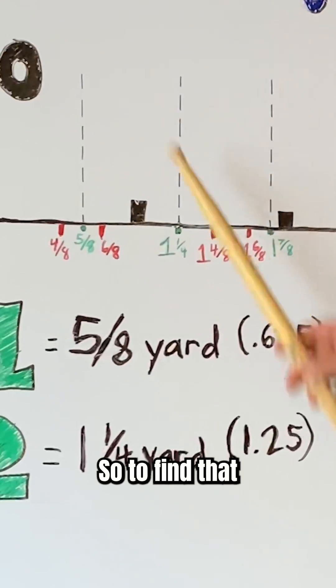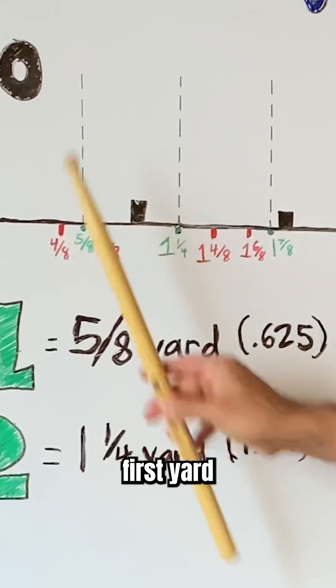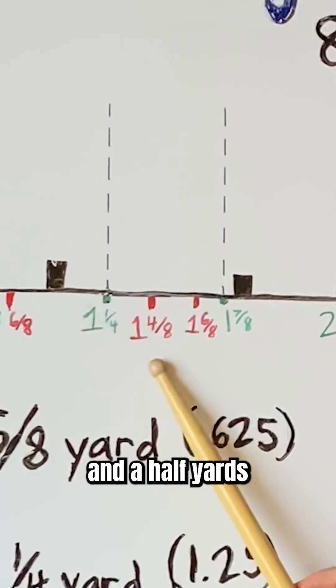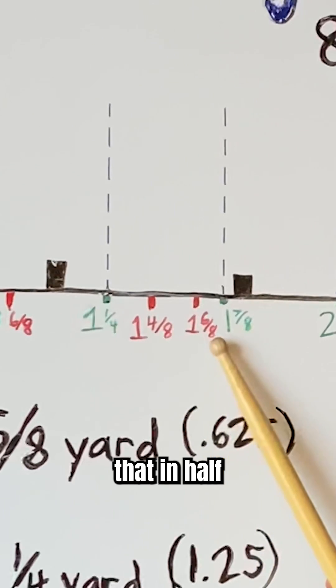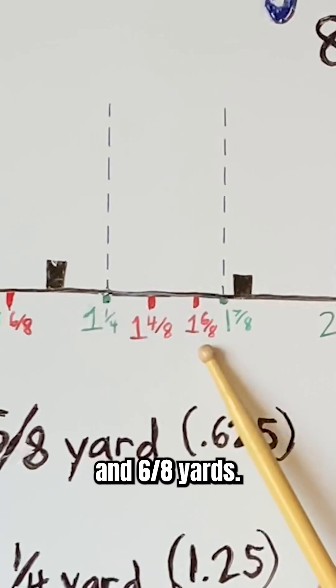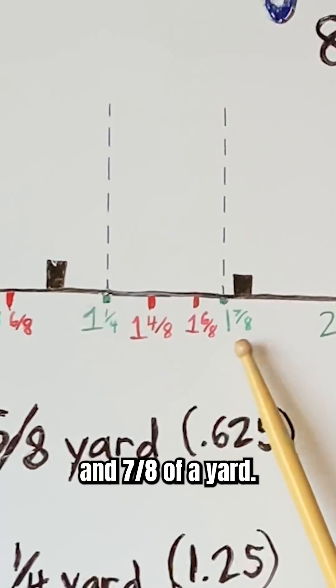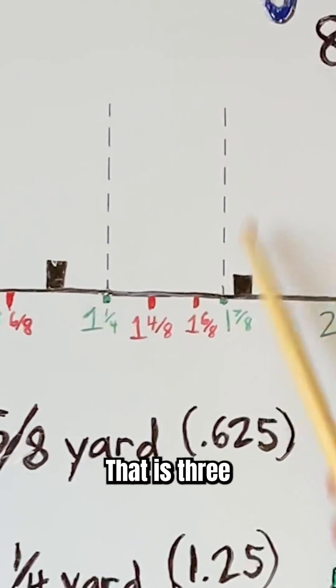So to find that, we're going to use a similar splitting technique as that first yard line. We're going to divide these in half. There's 1 and a half yards. Divide that in half. We have 1 and 6/8 yards. Then we're going to divide that in half. You've got 1 and 7/8 of a yard. That is 3 steps.